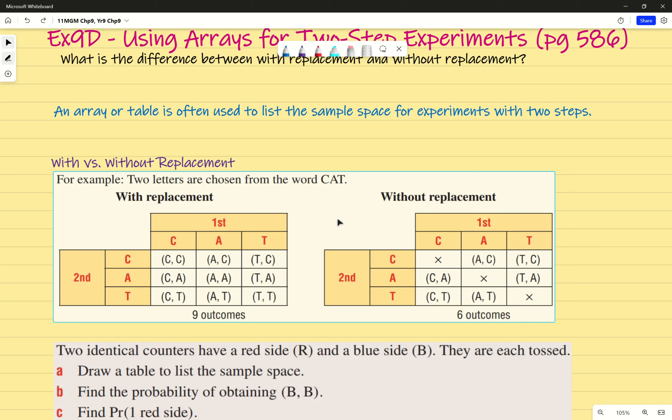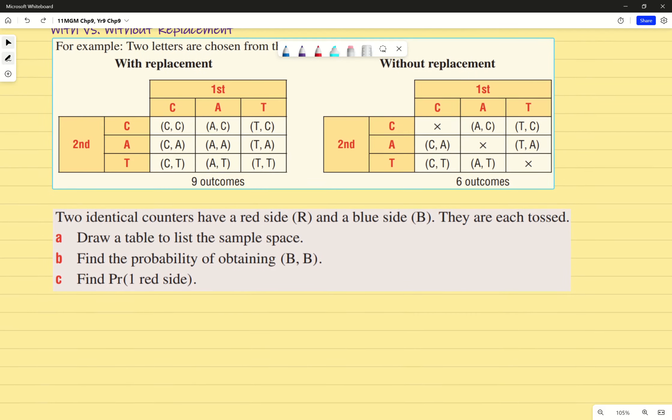In most things in life, it'll be without replacement. What we're going to do is draw out a table or an array so we can represent this scenario. In this case, we've got two identical counters that have a red and blue side. We're assuming they're exactly the same likelihood. We're going to draw a table to list the sample space.